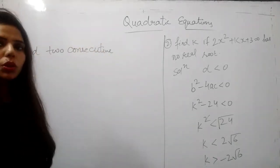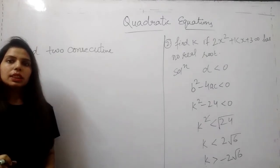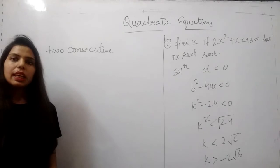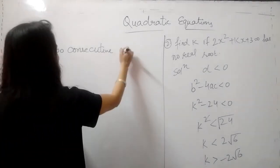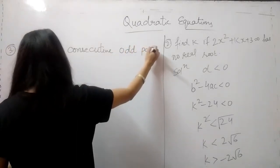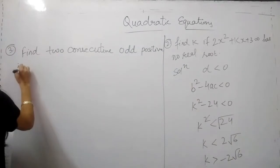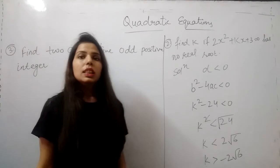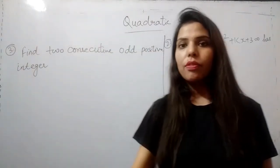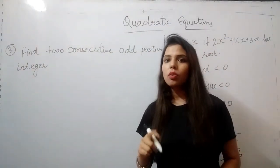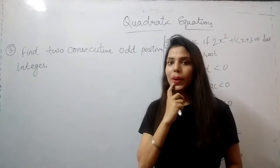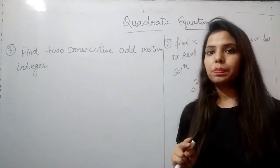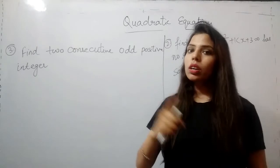The very first problem is find 2 consecutive odd positive integers. Consecutive numbers are those 2 saath-saath wale, saath-saath means basically 2 and 3, 5 and 6, 8 and 9. Those are known as consecutive numbers. Odd consecutive means, say we have 3 and 5, 3 and 5 both are odd consecutive.